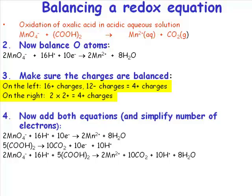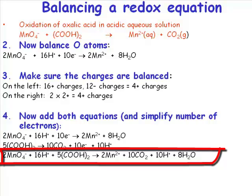We've got our oxidation of oxalic acid equation. Now we need to add these two equations together. You've got two permanganate, 16 protons, five oxalic acids goes to two manganese 2+, 10 CO2s, 10 H plus, and eight water molecules.